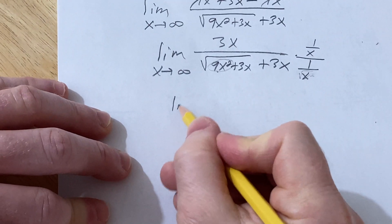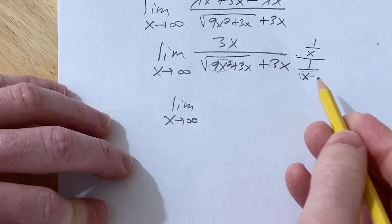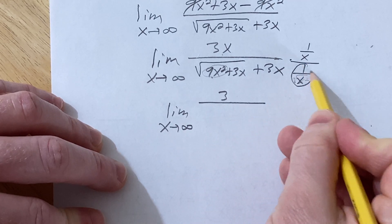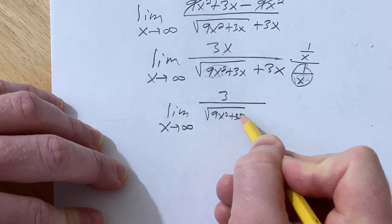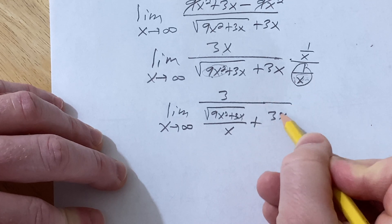So this is equal to, I'll explain it in the next step, there's a trick. So 3x times 1 over x is just going to be 3. Over, and then we're going to distribute this. So 1 over x times this is this, plus, and then here we have 3x over x.